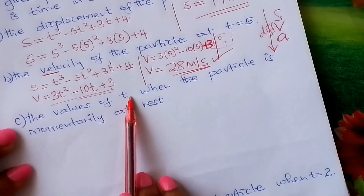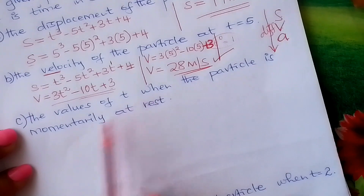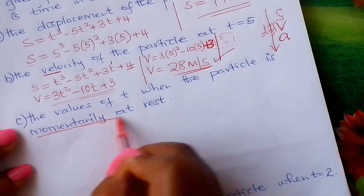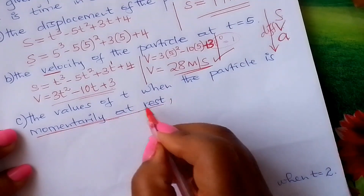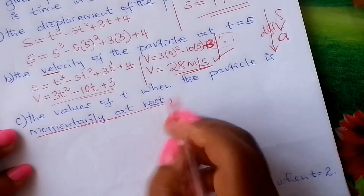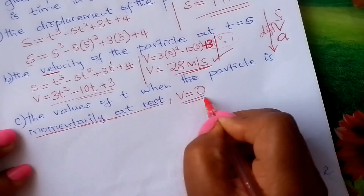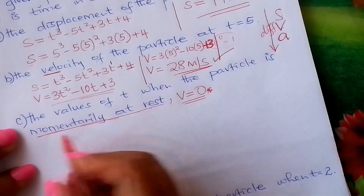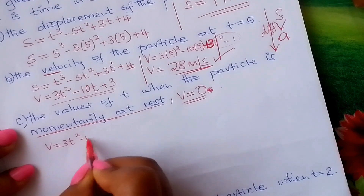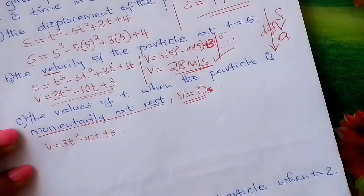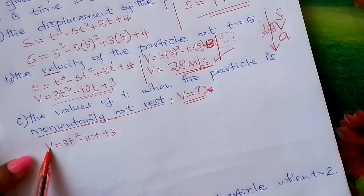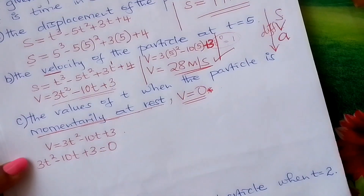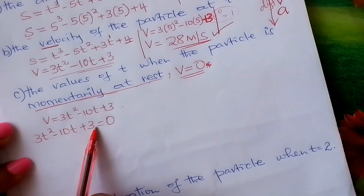Find the values of t when the particle is momentarily at rest. When a particle is momentarily at rest, velocity is 0. So you come and write the expression for velocity, and where you have v you fix 0. So: 3t squared minus 10t plus 3 equals 0. This is a quadratic equation.